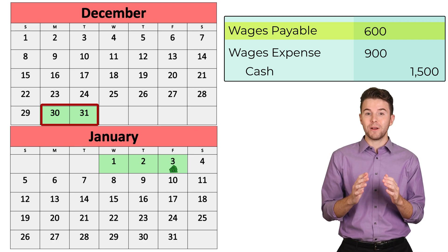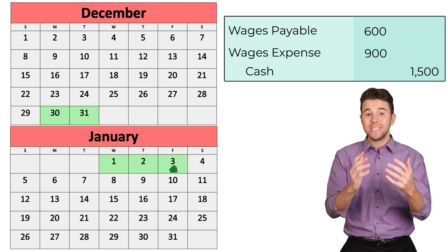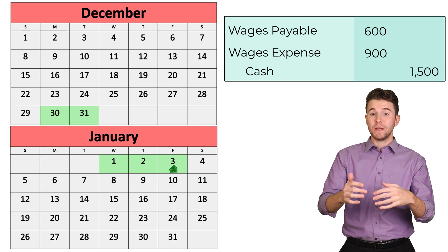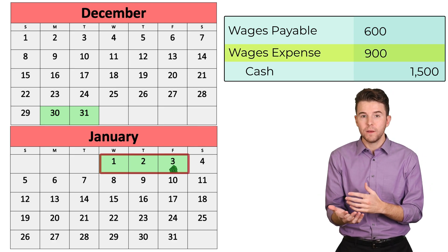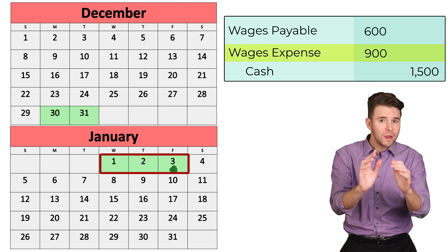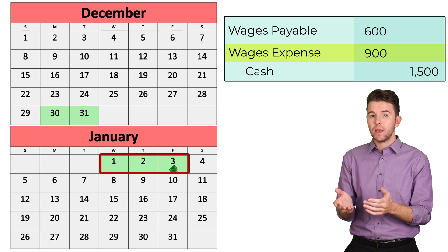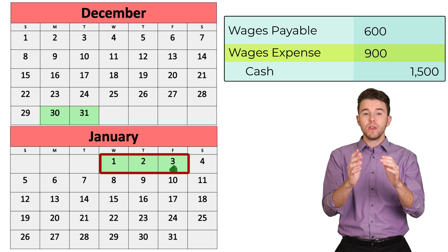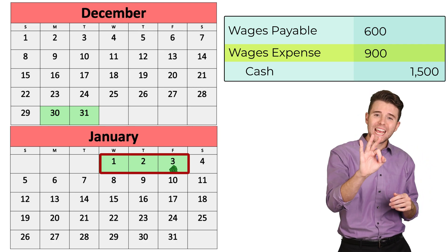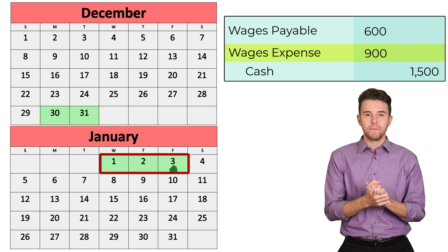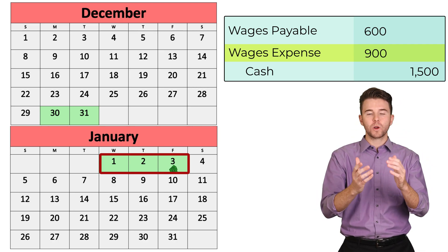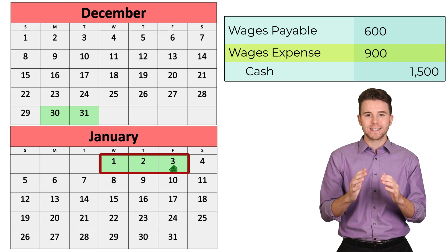We debited wages payable because we have now paid the employee the $600 we owed them from December. We debited wages expense for $900, or three workdays at $300 per day, because the employee worked three days in January and we must record that expense.